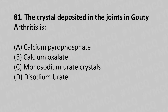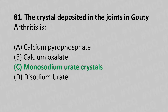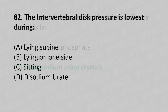Moving to our 81st question. The crystal deposit in the joint in gouty arthritis is: option A calcium pyrophosphate, option B calcium oxalate, option C monosodium urate crystals, option D disodium urate. The answer is option C, monosodium urate crystals.